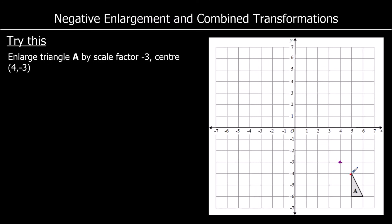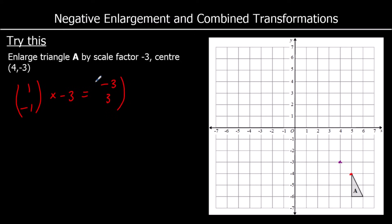If I take one of the corners of the triangle — that would be my red point — to get there at the moment from the centre I go right 1, down 1. So the vector is (1, -1). I'm going to multiply that by negative 3, so that will become negative 3, positive 3 — meaning back 3, up 3. So that's my red point.